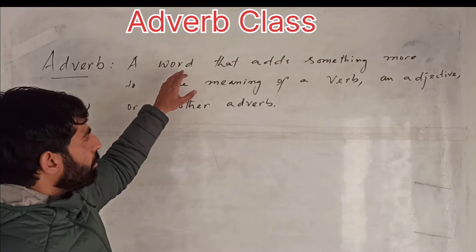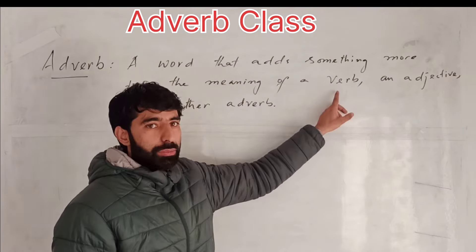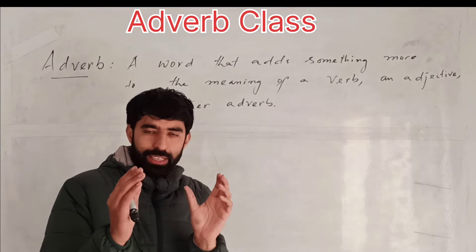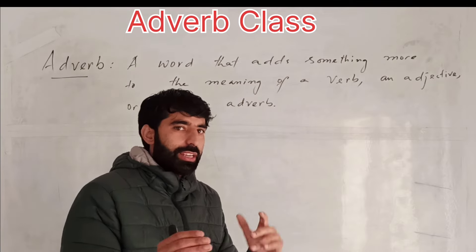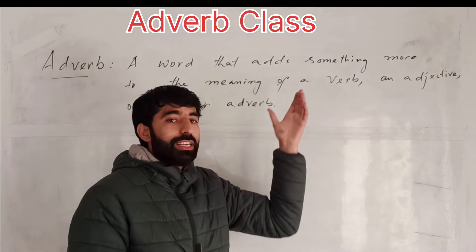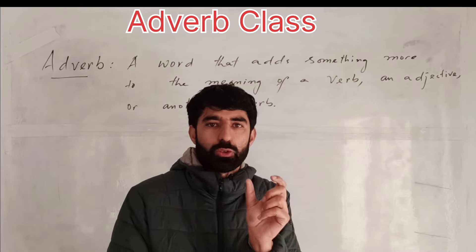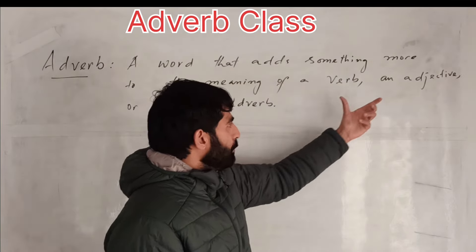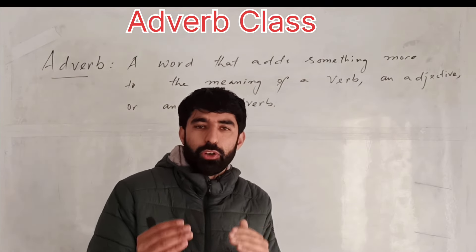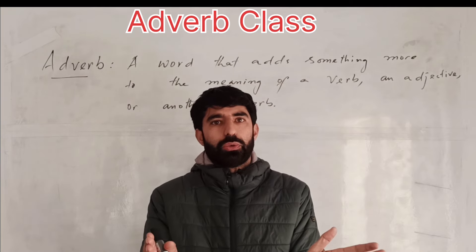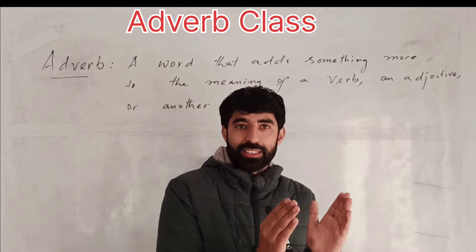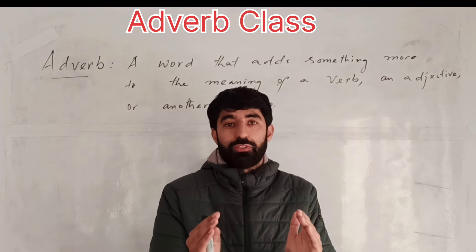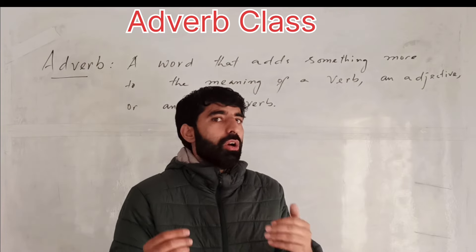That means we have a verb in a sentence, and one more word comes and attaches itself with that verb. The word that attaches itself with the verb is called an adverb — addition to verb. Or, if there is an adjective in the sentence, a word comes and attaches itself with the adjective, and that word is also called an adverb.